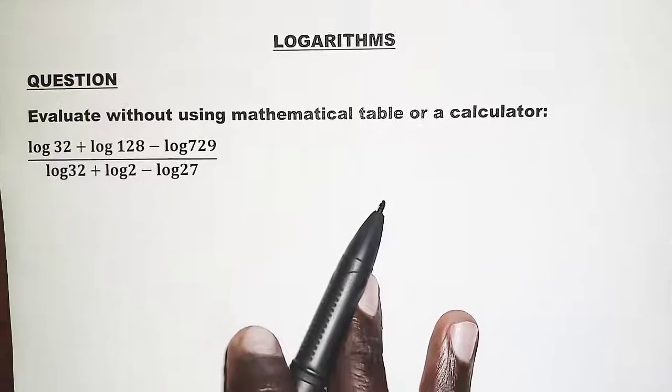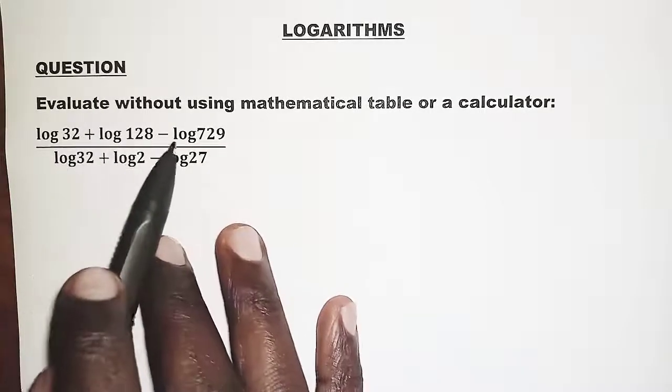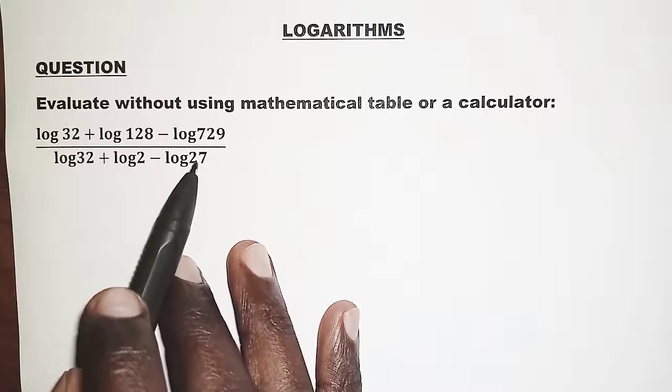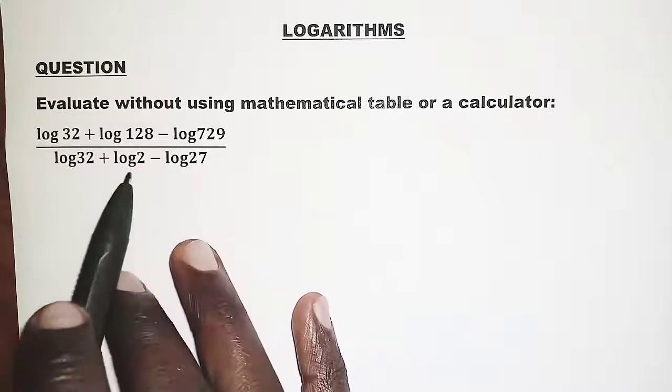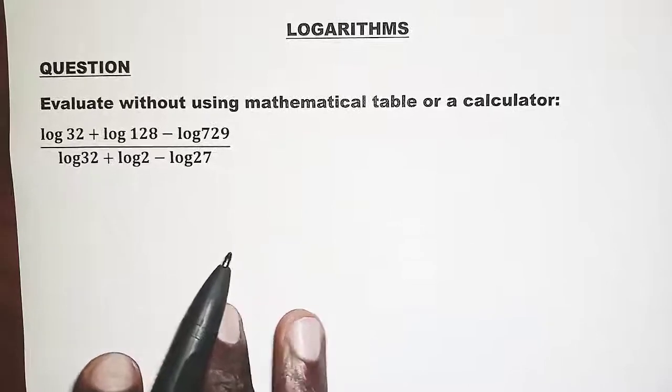In this problem we have the values 32, 128, 729 and 27. We are going to factorize them and express them in power form.